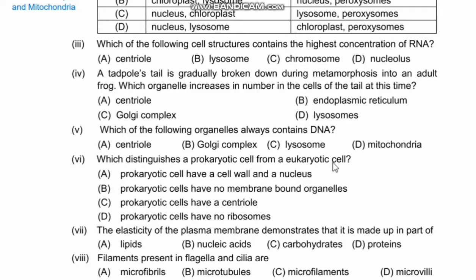Question 5: Which of the following organelles always contains DNA? Options are centriole, Golgi complex, lysosomes, and mitochondria. Mitochondria and chloroplast are the two organelles that have their own DNA and ribosomes. So our right option is D.